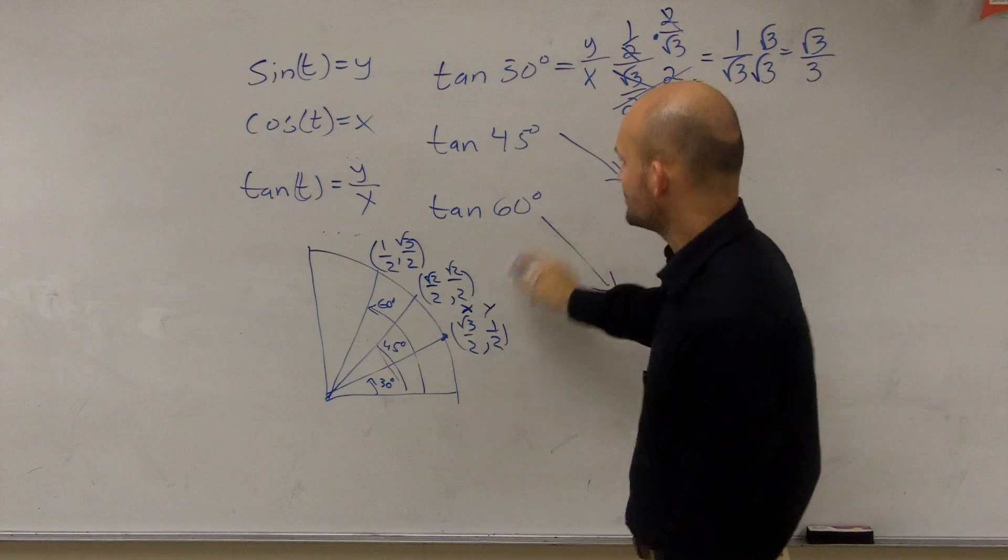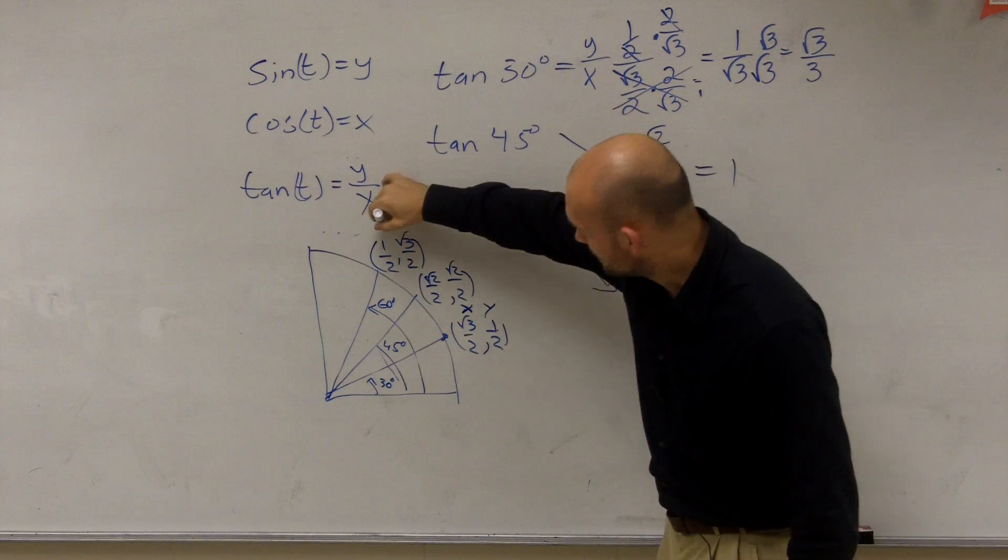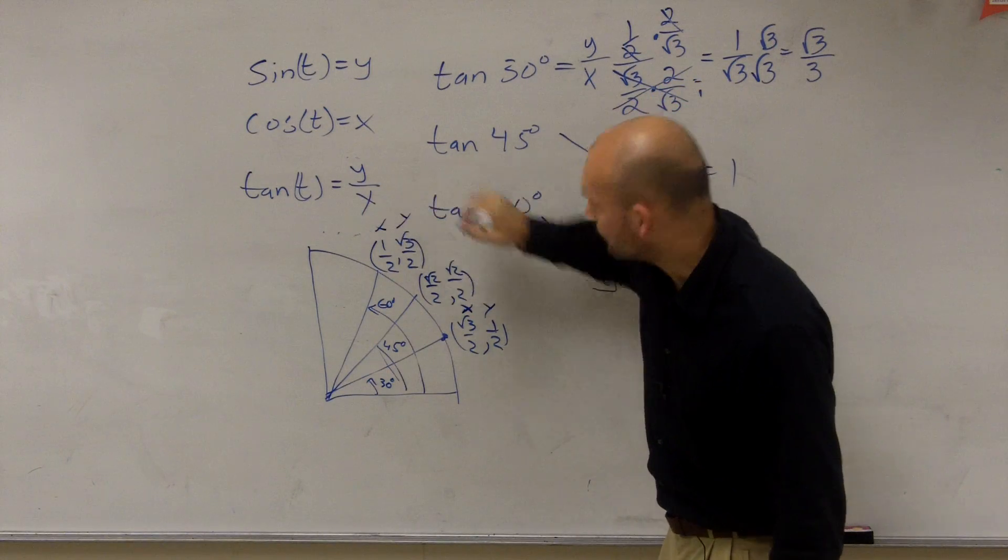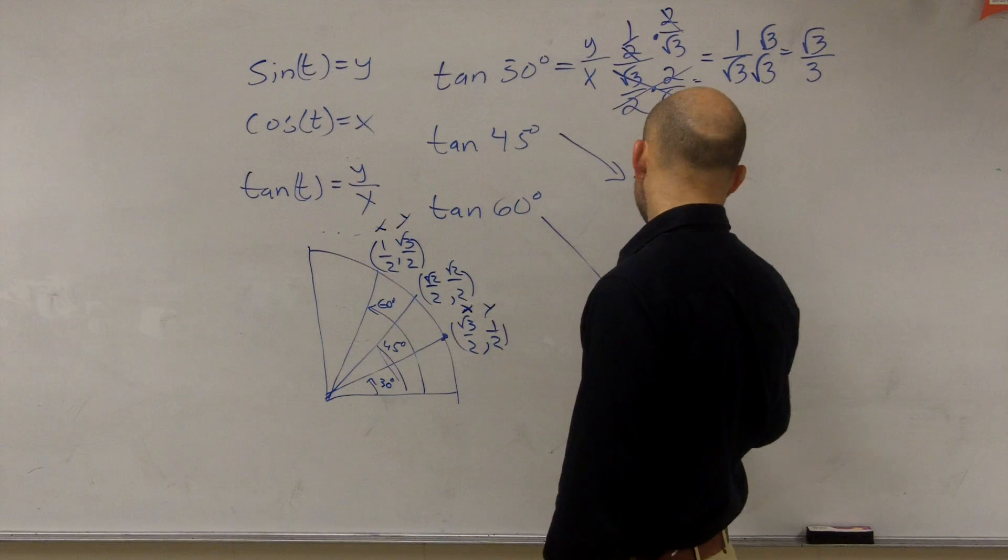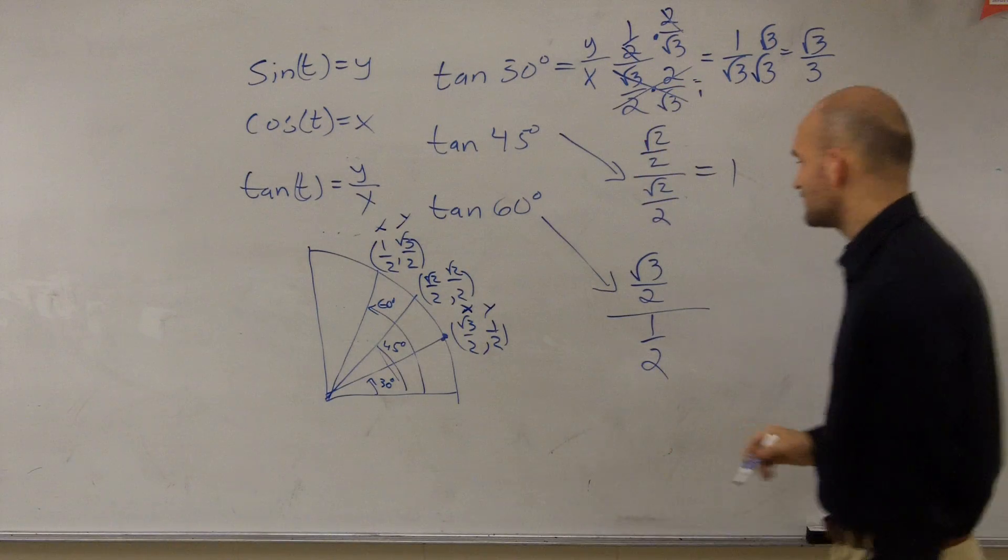Tangent of 60, I go to my 60 degree angle and I look at my x and my y. So I do square root of 3 divided by 2 divided by 1 half. Well, ladies and gentlemen, I'm dividing by 2 on both.